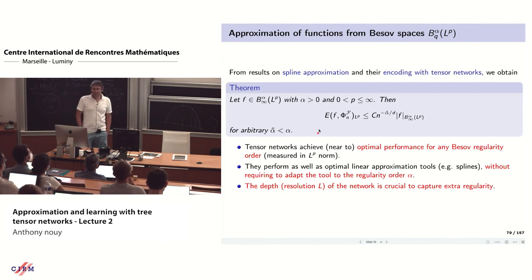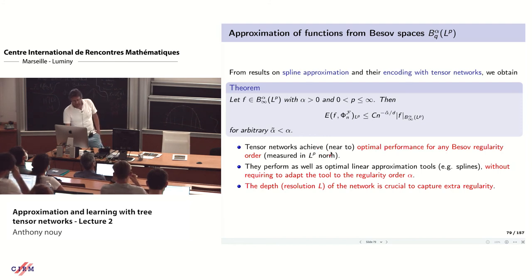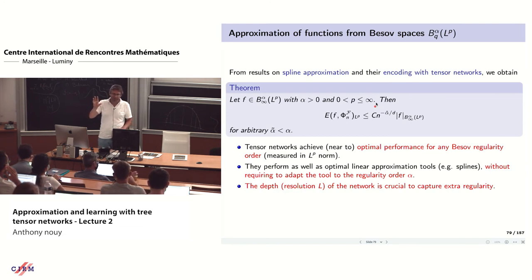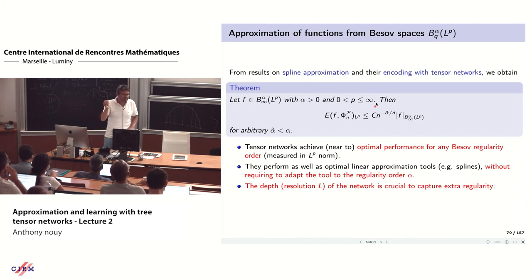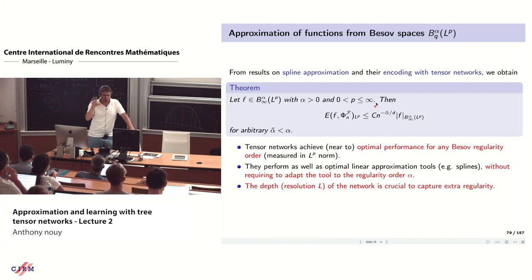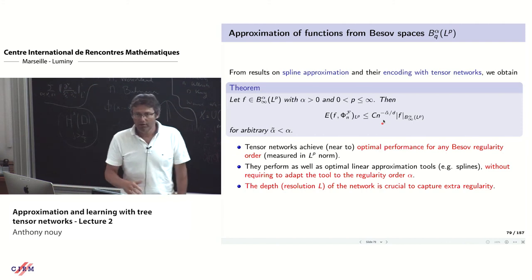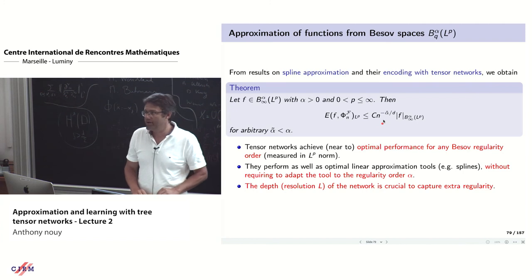This result holds for the approximation tool based on tensorization. Interestingly, the tool is always the same whatever the regularity alpha, because this result holds whatever the space s you choose — in particular for piecewise constant approximation. If s is the set of constants, you are doing piecewise constant approximation on a dyadic partition of your interval, exploiting only the low-rank structure. Whatever the local polynomial degree you choose, you obtain a result near-optimal for the same approximation tool — you don't need to adapt the tool to the regularity.